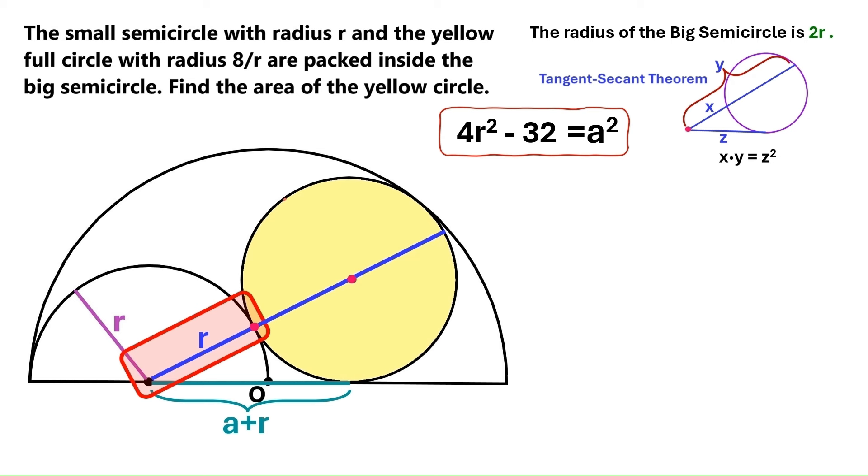And this one is 8 over r, because it's the radius of the yellow circle. And so is this one. And this entire distance adds up to r plus 16 over r.